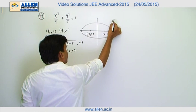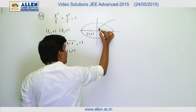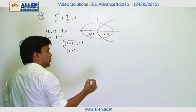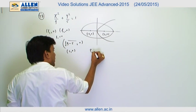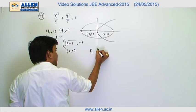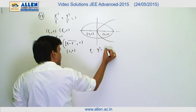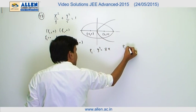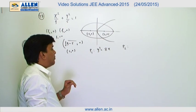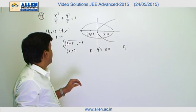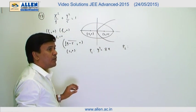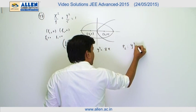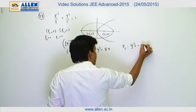There are two parabolas given, P1 and P2. Parabola P1 has its focus at f1, and its equation is y² = 8x. Parabola P2 has its focus at f2 and its equation is y² = -16x.